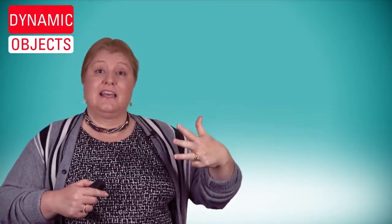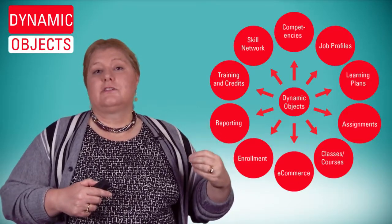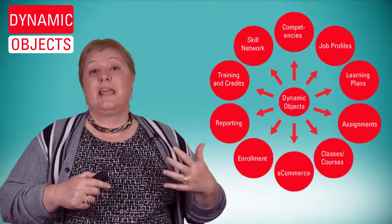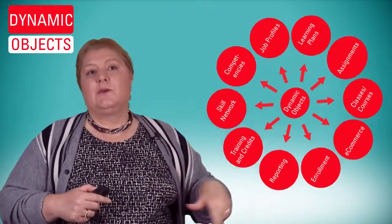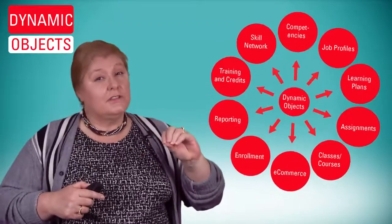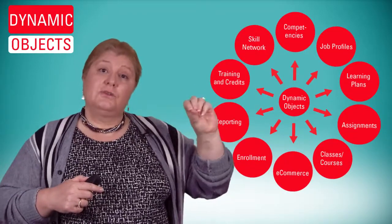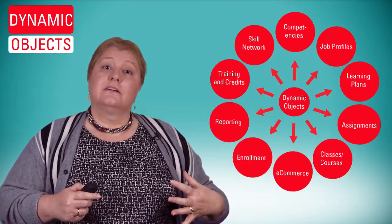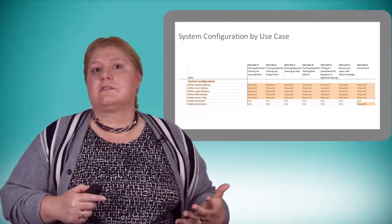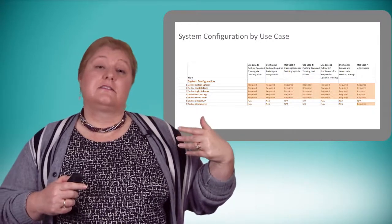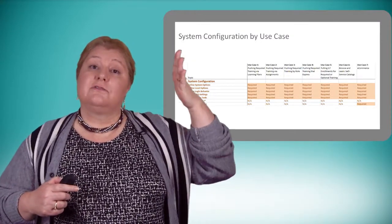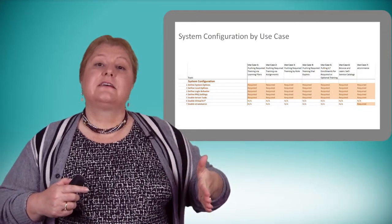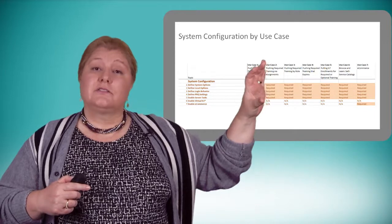So we have the tasks, the use case scenarios, the user types, and then we combine all of that with the dynamic objects. This gives us the opportunity to control what the displays look like and how things behave for the different user types. You can see the circle here — you're not working exclusively with any one of these items, but you can pick and choose. As we start combining that content together, what we end up with is task lists that give us options. You can see the system configuration by use case, with different configuration options and tasks running down the left-hand side, with our seven different use case scenarios going across the top.